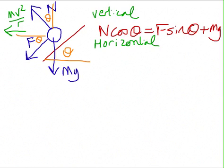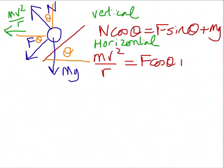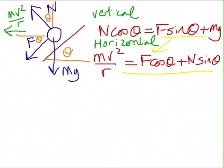Horizontally, the net force must equal mv²/r. So: mv²/r = f cos θ + n sin θ. What do we want? We want n. How are we going to get it? Well, the easiest way — if we want n, we've got to eliminate f. So if we rearrange the vertical equation to make f the subject and then substitute it into the horizontal equation, we'll have got rid of f and can then rearrange to make n the subject.